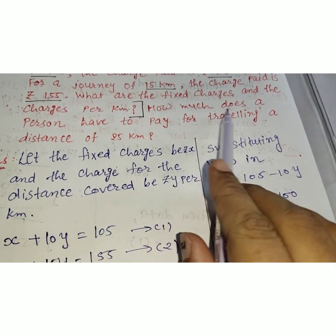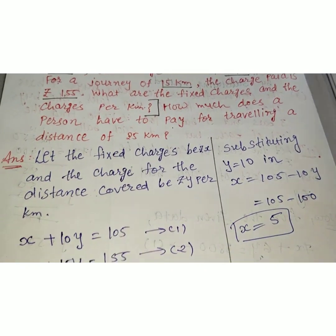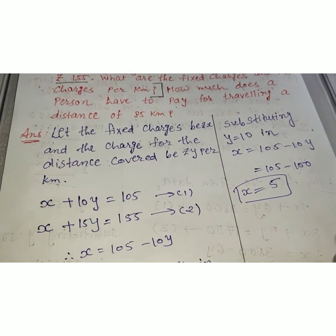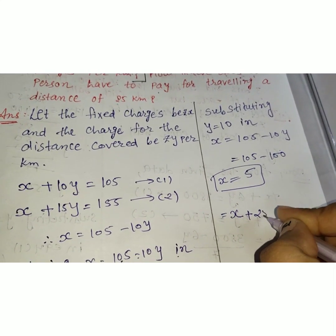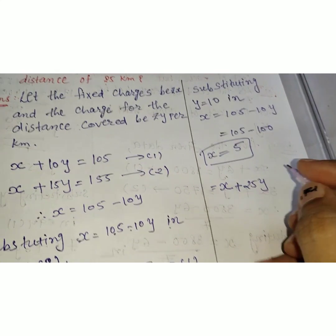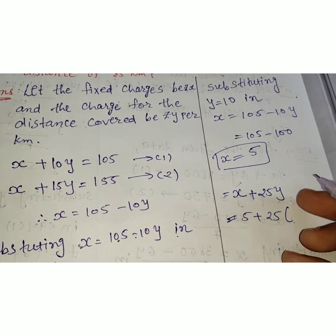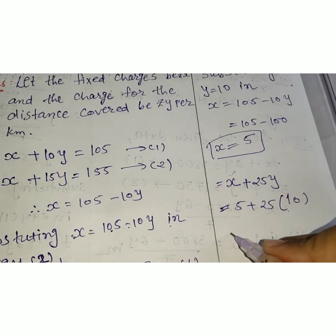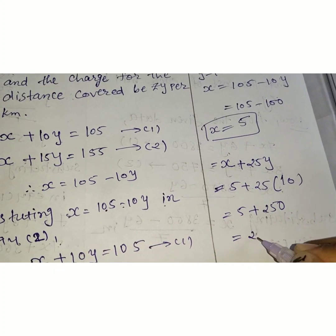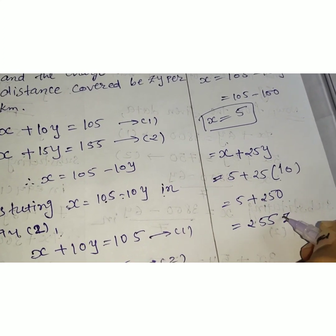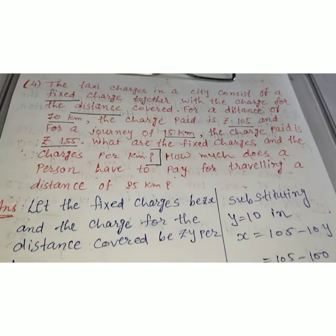Now the second part asks: how much does a person have to pay for travelling 25 km? For any distance, the fixed charge must be paid, so: x + 25y = 5 + 25 × 10 = 5 + 250 = 255 rupees. So a person has to pay Rs. 255 for 25 km.